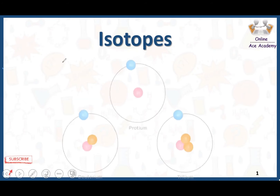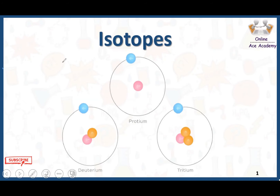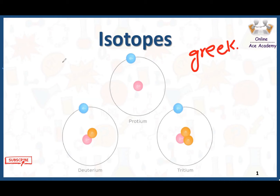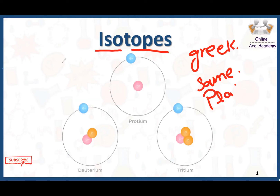Isotopes. The word isotopes has been derived from two Greek words, isos and topos, which further translate to 'the same place.' So what does isotopes mean? Isos and topos — it means same place.